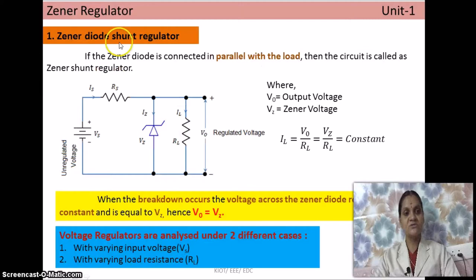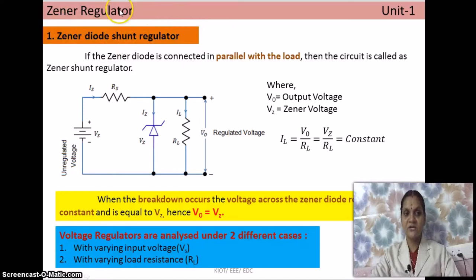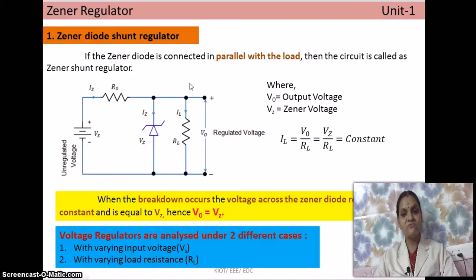Now, the zener diode shunt regulator. 'Shunt' means parallel. So in a zener diode shunt regulator, the zener diode acts as a regulator while connected in parallel with the load. You know that the zener diode is used in reverse bias — specifically in the reverse bias breakdown region — and that is the only condition under which it operates.